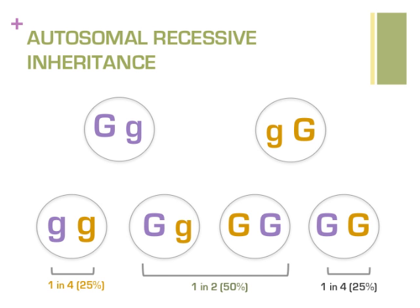It is also possible that one parent passes on the change and the other parent does not, or that both parents pass on the instructions that are not changed. For two parents who are carriers of the same genetic condition, they have a 1 in 4, or 25%, chance that any child they have together will be affected, a 1 in 4 chance the child will be a carrier like them, and a 1 in 4 chance the child will not be affected or a carrier of the recessive condition. This process occurs randomly in every pregnancy.